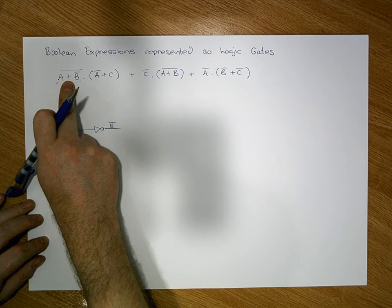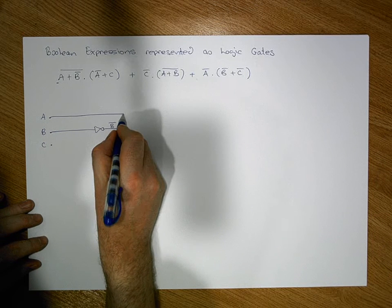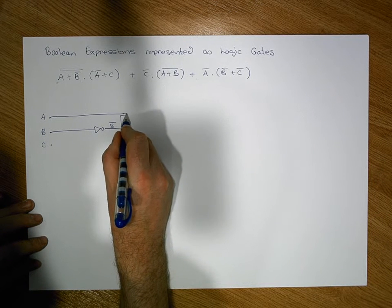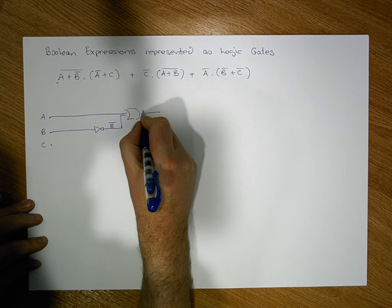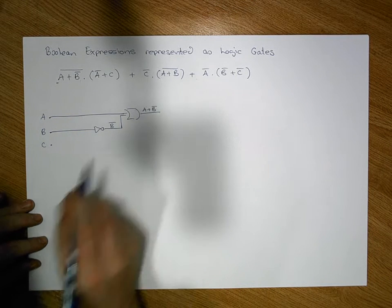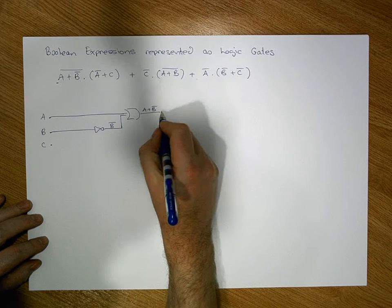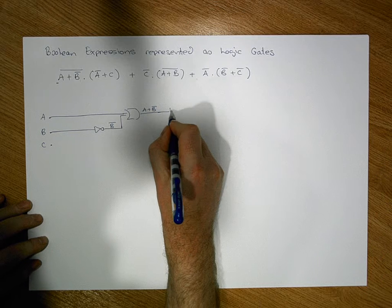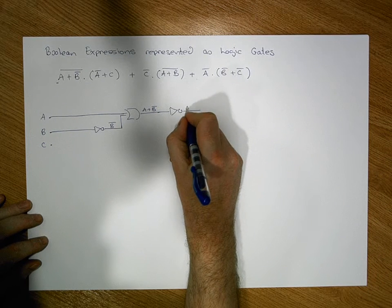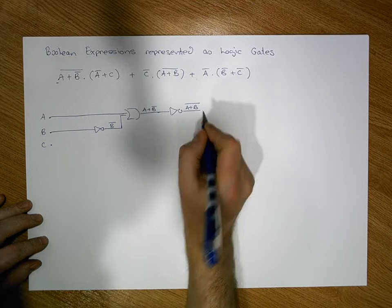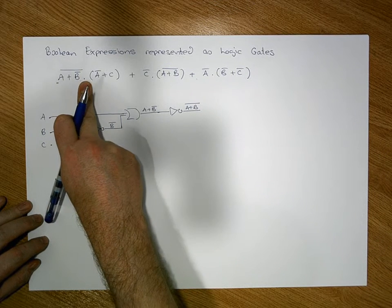Now that we have the B-bar signal, we pass it into an OR gate along with the A signal to give us A OR B-bar. Now that we have A OR B-bar, we can negate it by passing it into an inverter, and what we get out the other side is (A OR B-bar)-bar. This is the left upper AND operand.